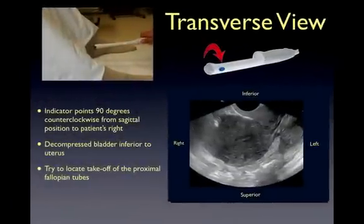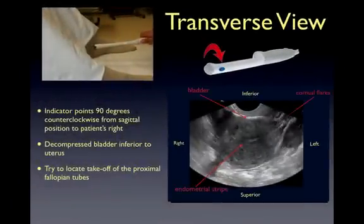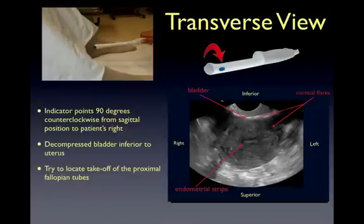After adequately viewing the uterus in a sagittal cut, turn the indicator 90 degrees counterclockwise so that the indicator is now pointing to the patient's right. This will give you a transverse, or more accurately, a coronal view of the pelvis. The bladder will be seen inferior to the uterus, and the fallopian tubes, though rarely seen, will take off from the cornual flares to the right and left of the uterus.